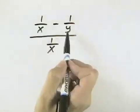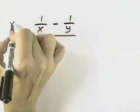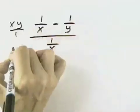One of those factors is an x and another one is a y. That means I can multiply in the numerator and the denominator by xy.